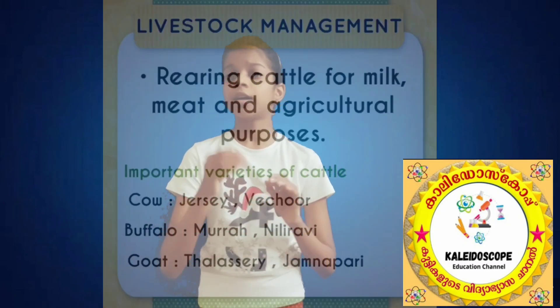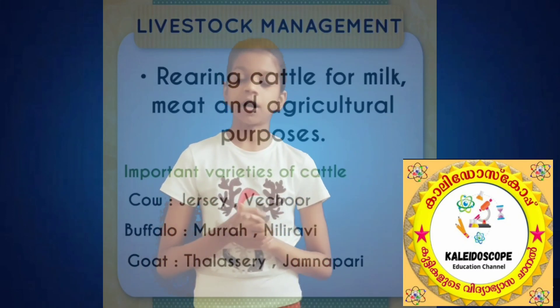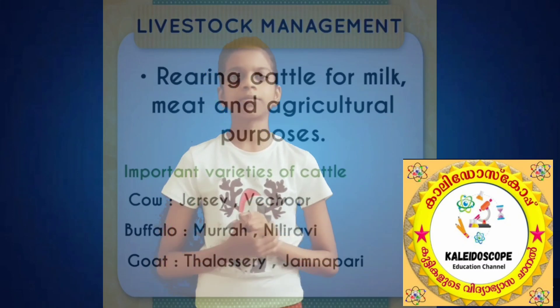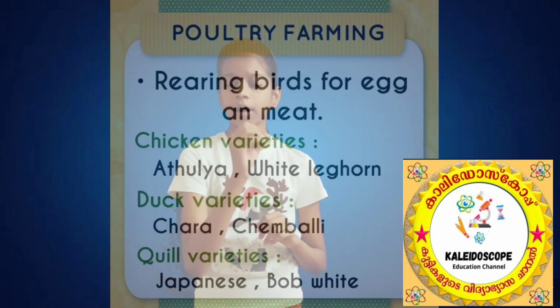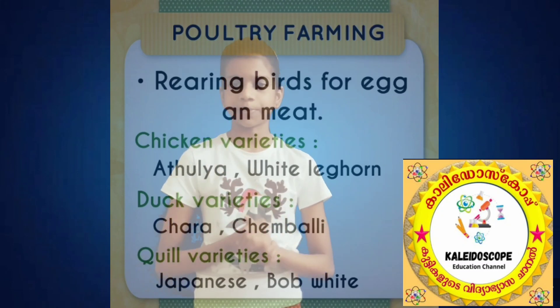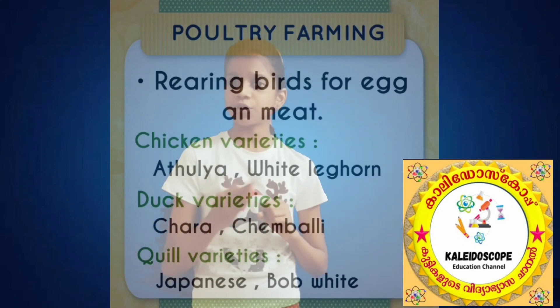The first sector is Animal Husbandry, which consists of Livestock Management, Poultry Farming, Pisciculture, and Cuniculture. Poultry Farming products include egg, meat, and skin. Varieties include Adulia, Chara, and Japanese (quail).